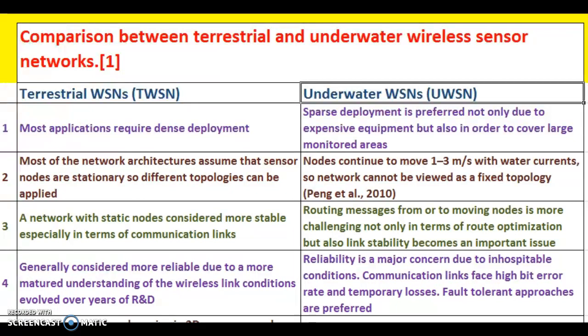Point 1: In TWSN, most applications require dense deployment. In UWSN, sparse deployment is preferred, not only due to expensive equipment but also in order to cover a large monitoring area.